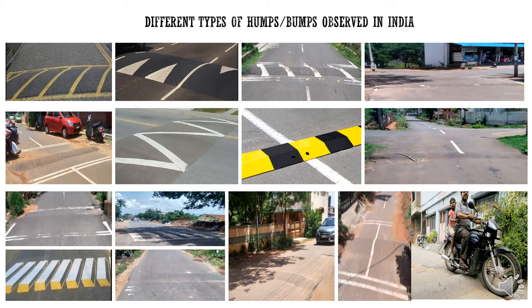When we started this project, we tried to capture various humps or bumps observed across India and various states. The commonly observed speed control measures on Indian roads are shown in the figure. Other speed control measures which are rarely observed are rumble strips and speed tables.